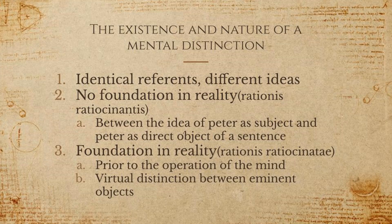Then we have the distinction with a foundation in reality, called the distinction of reasoned reason. It happens prior to the action of the mind, and it is very often identified with the virtual distinction, which is the distinction between eminent objects. Eminent objects are different things that are capable of being caused by a certain substance. So if you're able to act in a certain way, you have the distinction between your different powers to act in those different ways. It's not that they are distinct objects, but that they're distinct powers the object has that it's capable of causing.